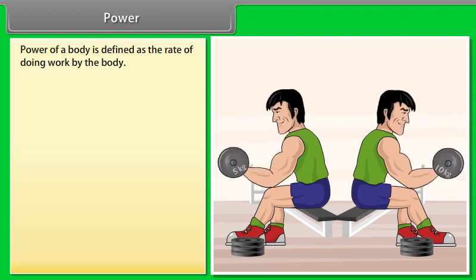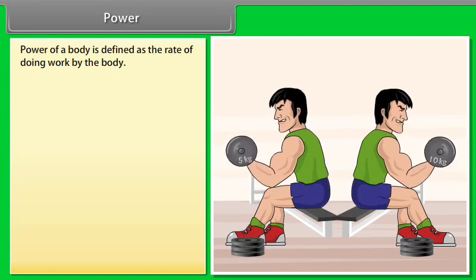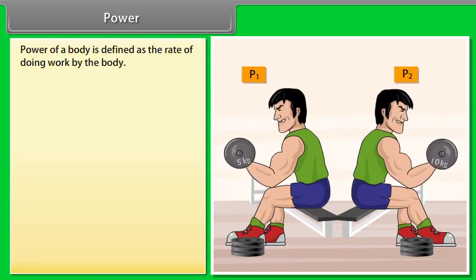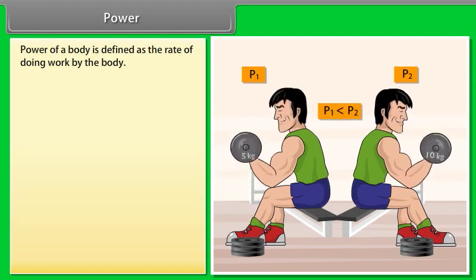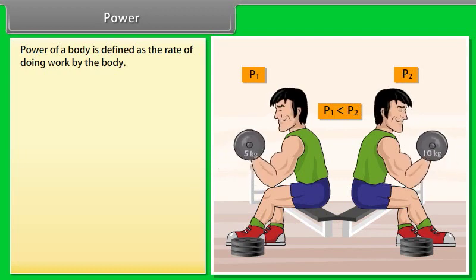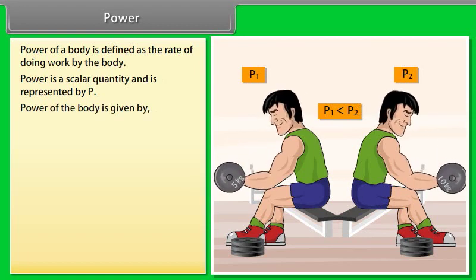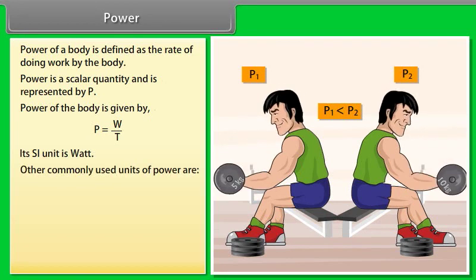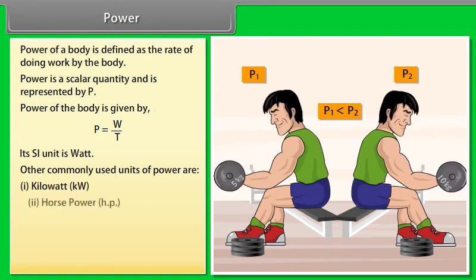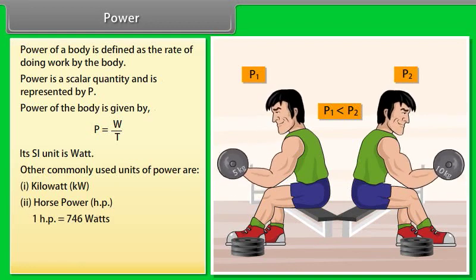Power. Power of a body is defined as the rate of doing work by the body. Let us take an example: a boy doing exercise by using dumbbell. When he used the dumbbell of 5 kg, then he applied power P1, and when he used the dumbbell of 10 kg, then he applied power P2. Hence the power rating is high when he used the dumbbell of 10 kg as compared to the dumbbell of 5 kg. Power is a scalar quantity and is represented by P. Power of a body is given by P equals W upon T. Its SI unit is watt. Other commonly used units of power are kilowatt and horsepower. One horsepower is equal to 746 watts.